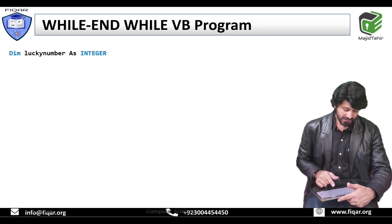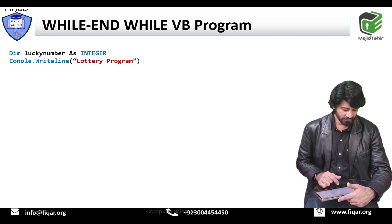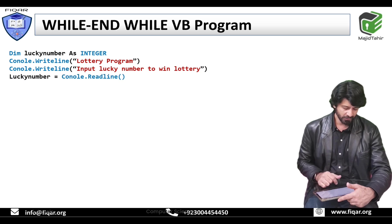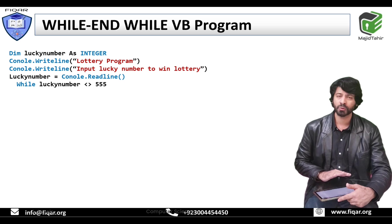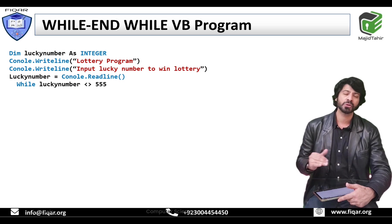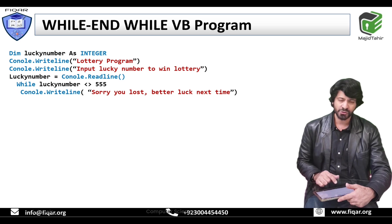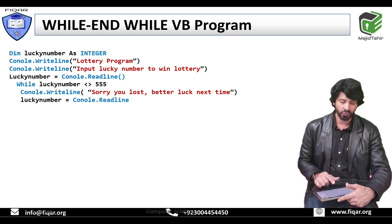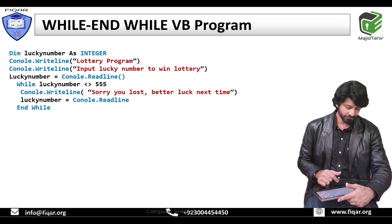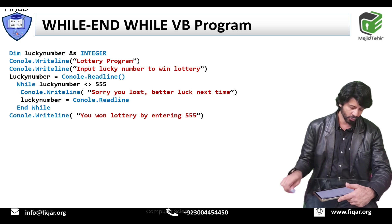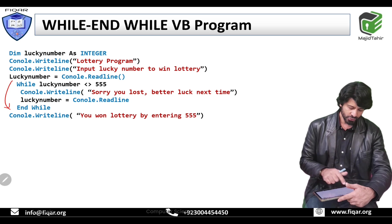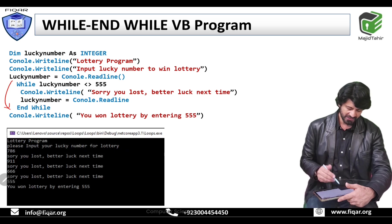The same Visual Basic program: dim lucky number as integer — declaration. Console.WriteLine — output statement. Console.ReadLine — input lucky number. Lucky number equals console.ReadLine — this is the input statement. While lucky number is not equal to 555 — you can see it relates line by line to the pseudocode. Console.WriteLine sorry you lost, better luck next time. Lucky number equals console.ReadLine — input again. If the user inputs 555, it goes out of the loop and displays: you won the lottery by entering 555.